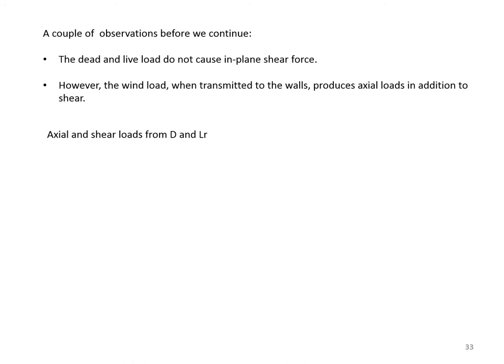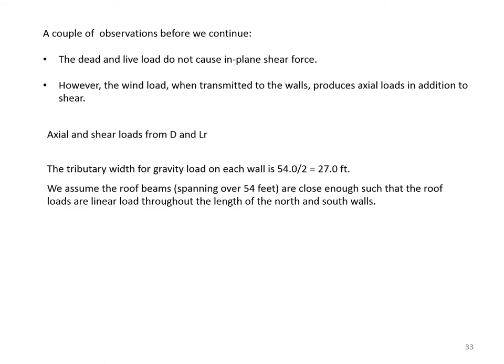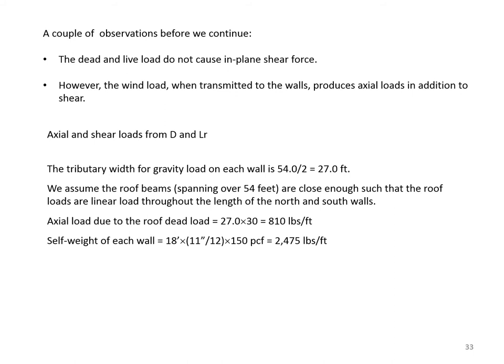The axial load due to roof dead load is 27 ft × 30 psf = 810 lb/ft. The wall self-weight is 18 × (11/12) × 150 = 2,475 lb/ft. Therefore, total dead load = 810 + 2,475 = 3,285 lb/ft. For live load: 27 × 100 = 2,700 lb/ft. There is no shear from dead load or roof live load.